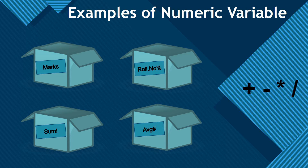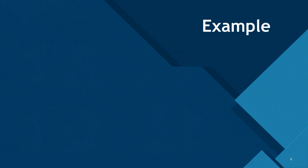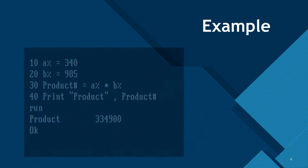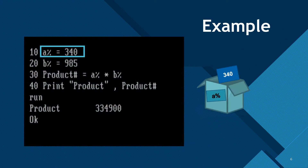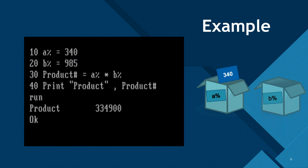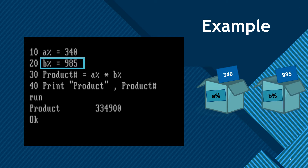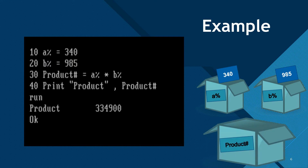All arithmetic operations — addition, subtraction, multiplication, and division — can be applied to numeric variables. For example, an integer type variable 'a' stores 340, and an integer type variable 'b' stores 985; the capacity of both is 2 bytes. We take a larger double precision variable 'product#' with a capacity of 8 bytes, which can store their product.